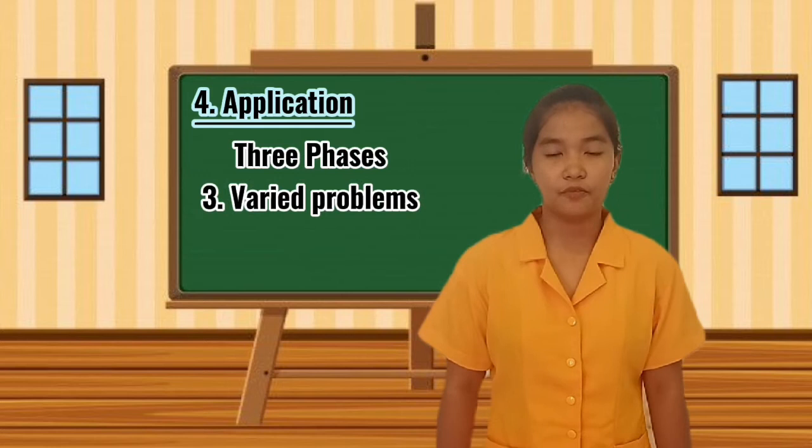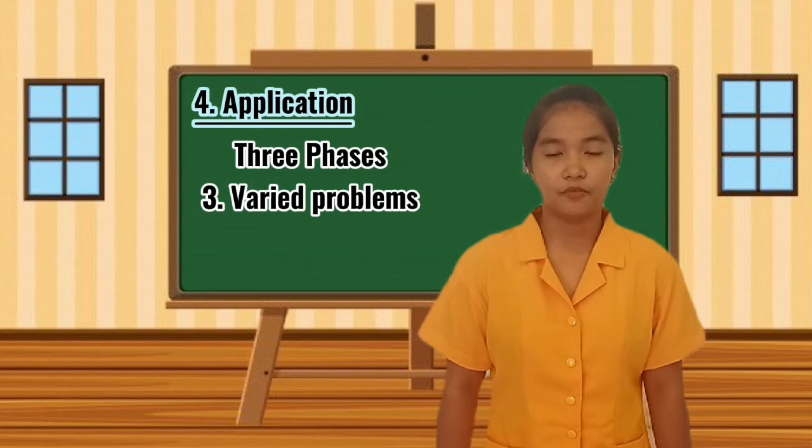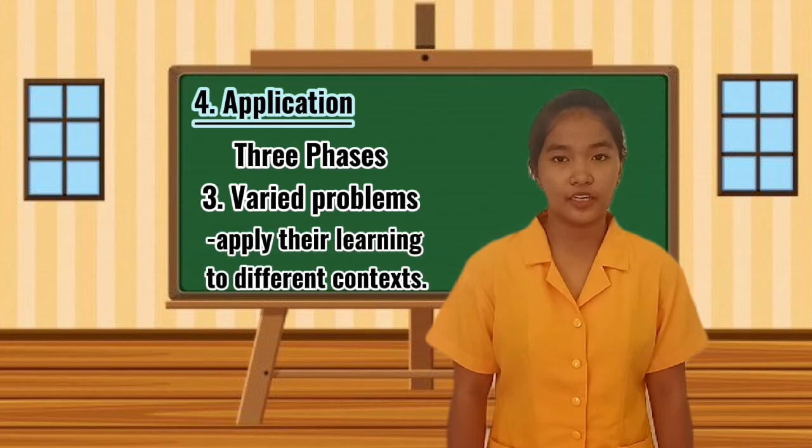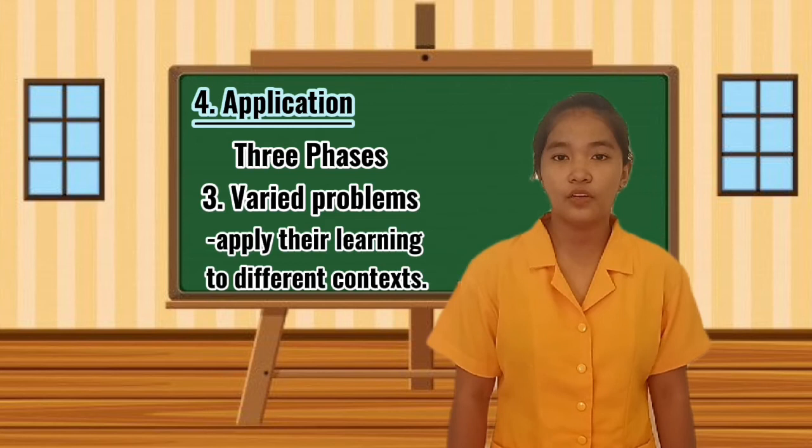The third phase is the varied problem. It provides opportunities for learners to apply their learning to different contexts. Students are not all the same — they have different kinds of skills and ideas. Hence, by having these differences, it allows learners to apply knowledge to different contexts and learn from different perspectives.